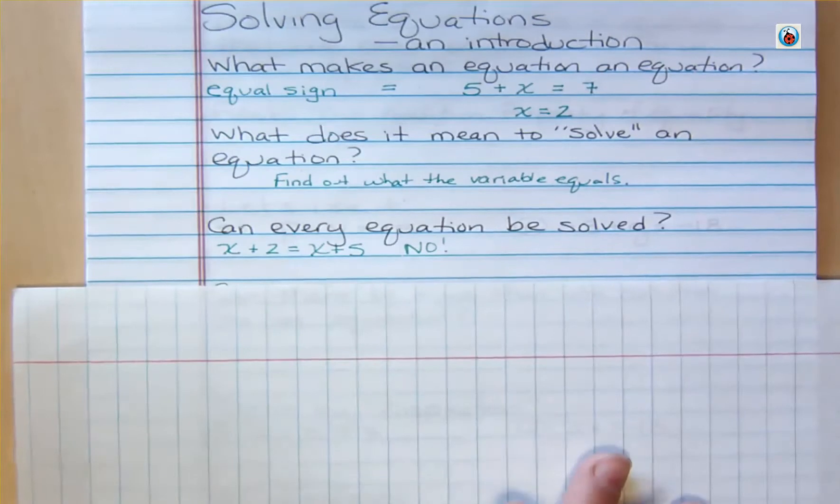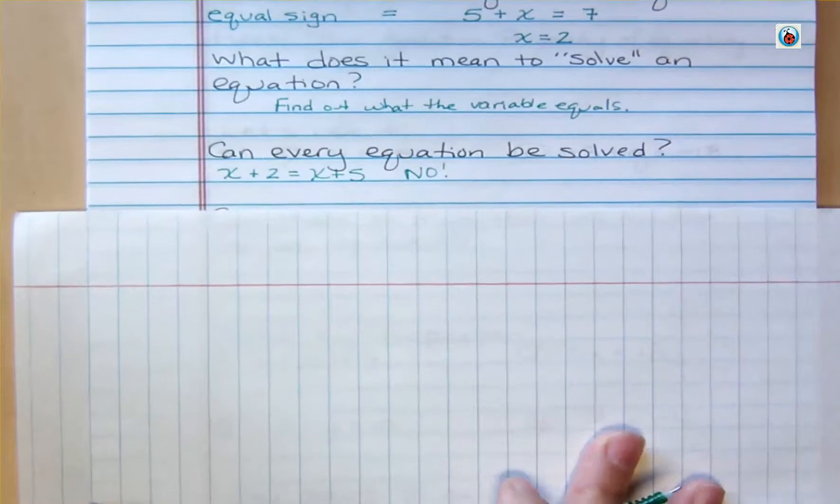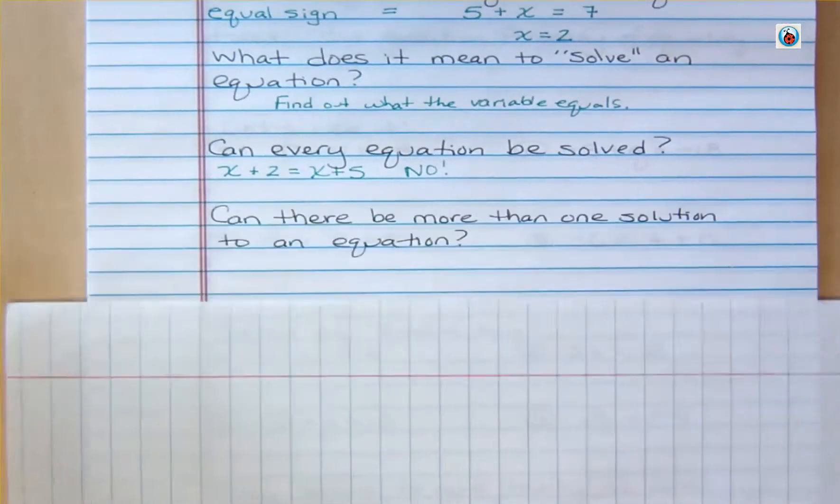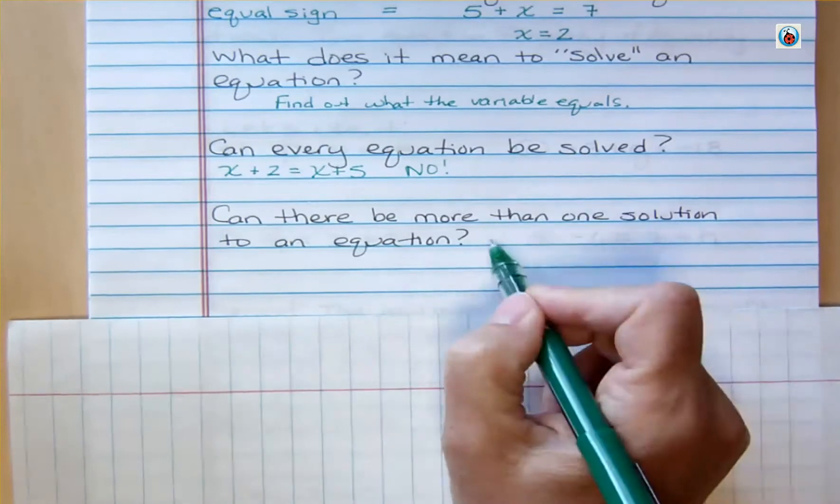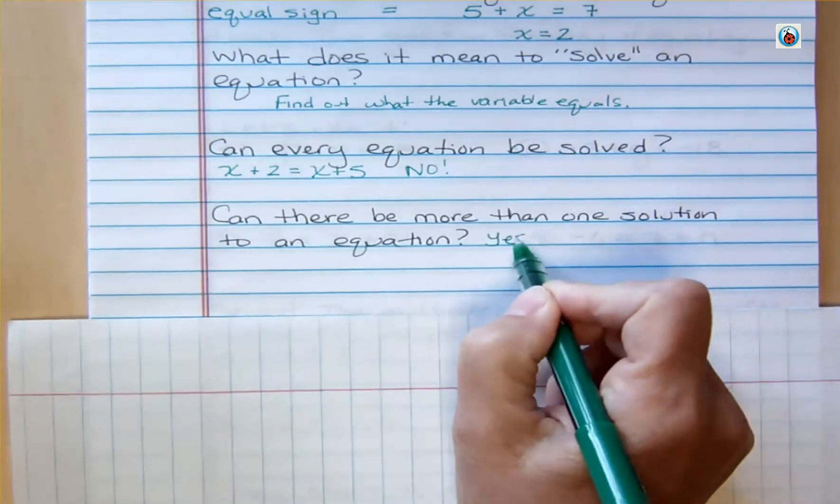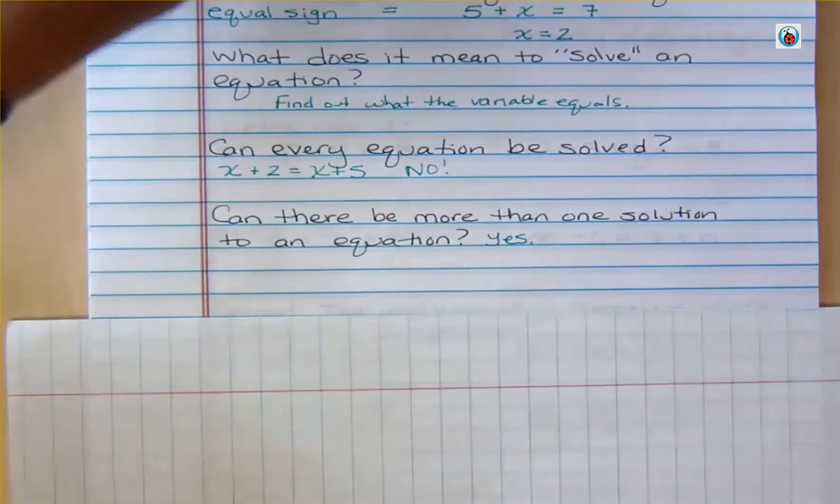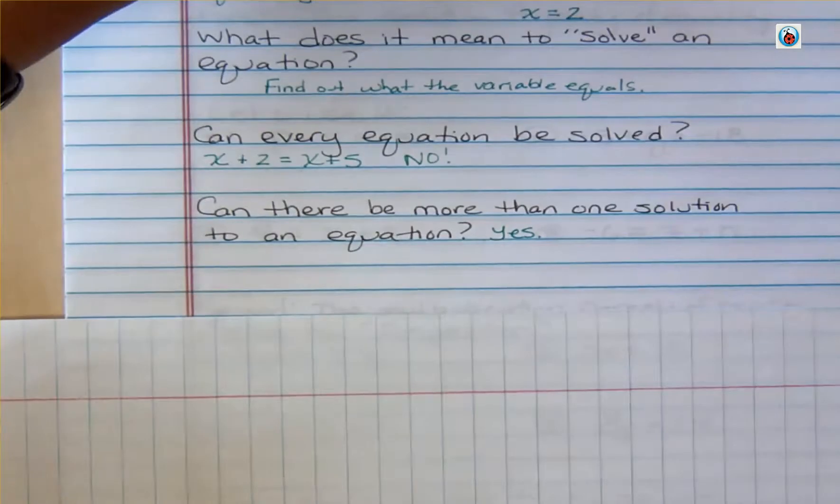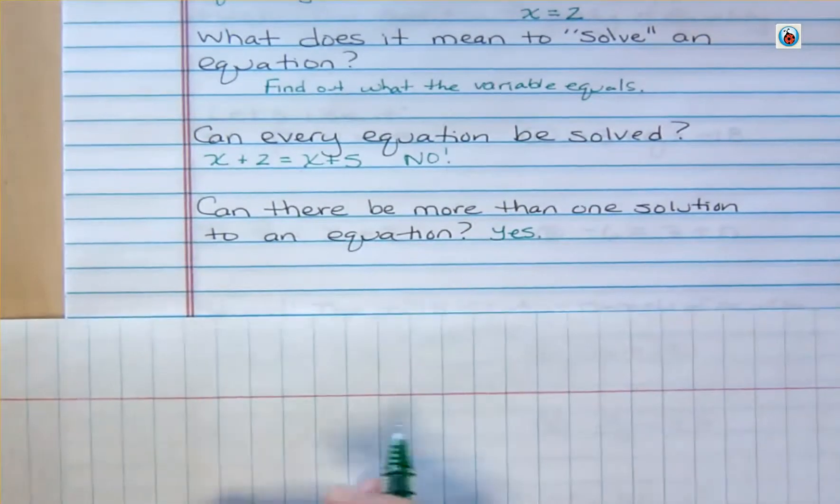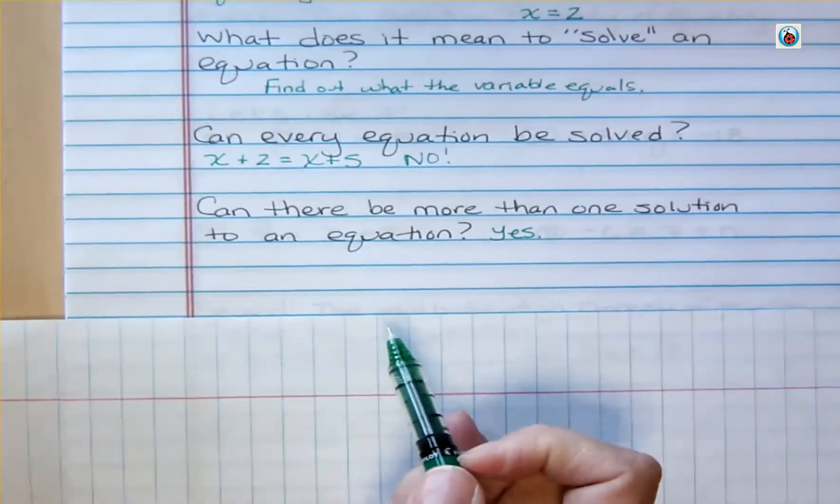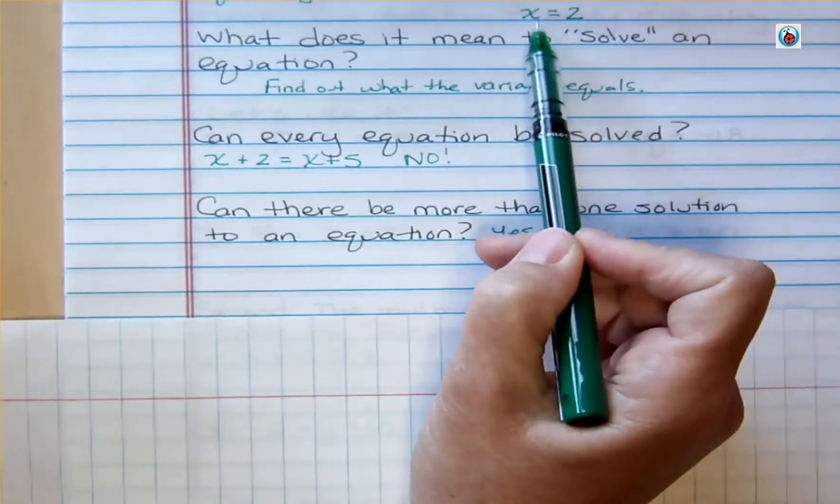But when you're starting this, don't write no solution. That's not really what's going to happen for you for most of them. Can there be more than one solution to an equation? The answer is yes. There can be. But for our purposes, we're solving equations that don't have that kind of thing happening very often. There can be more than one solution to an equation. The equations that we're talking about, that we're writing, have these variables that are to the first power, like I said up there in the beginning.